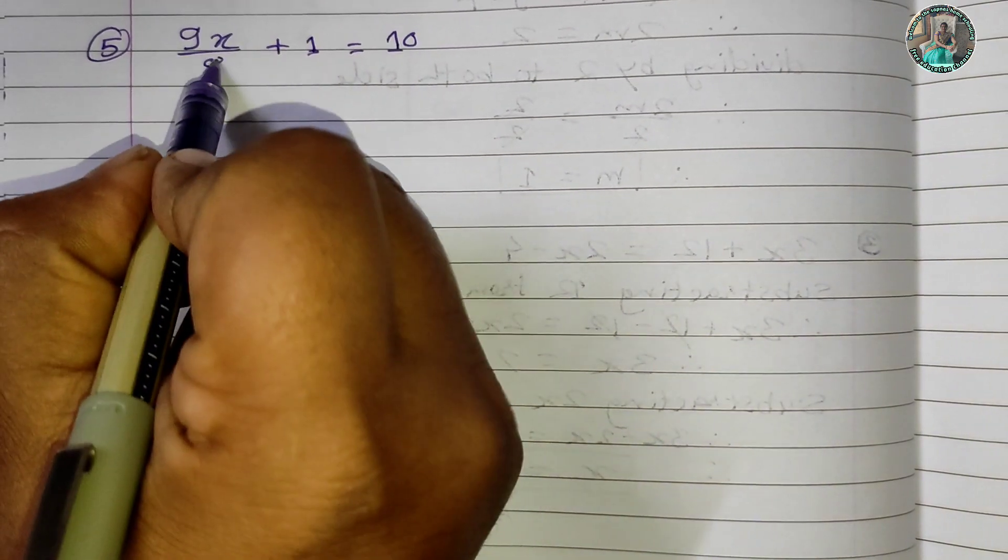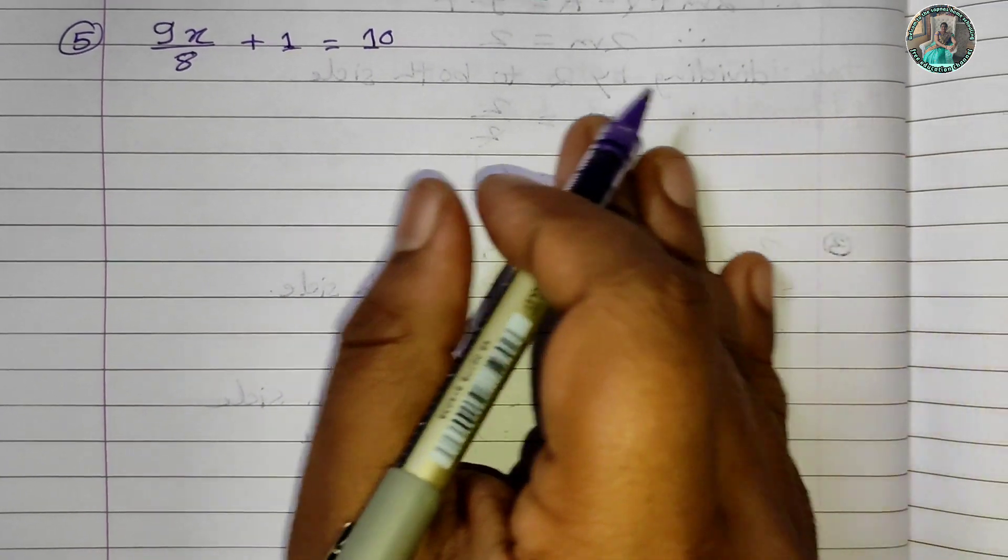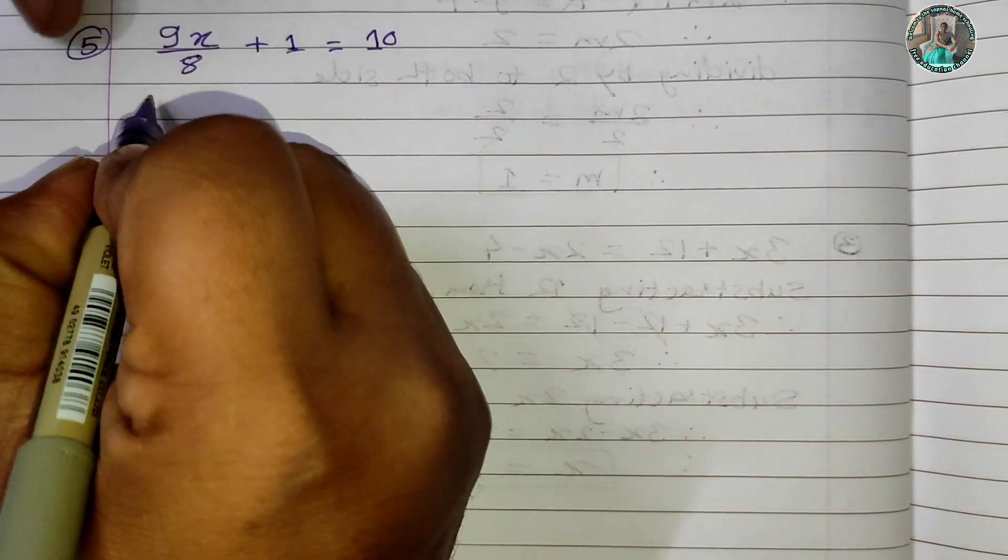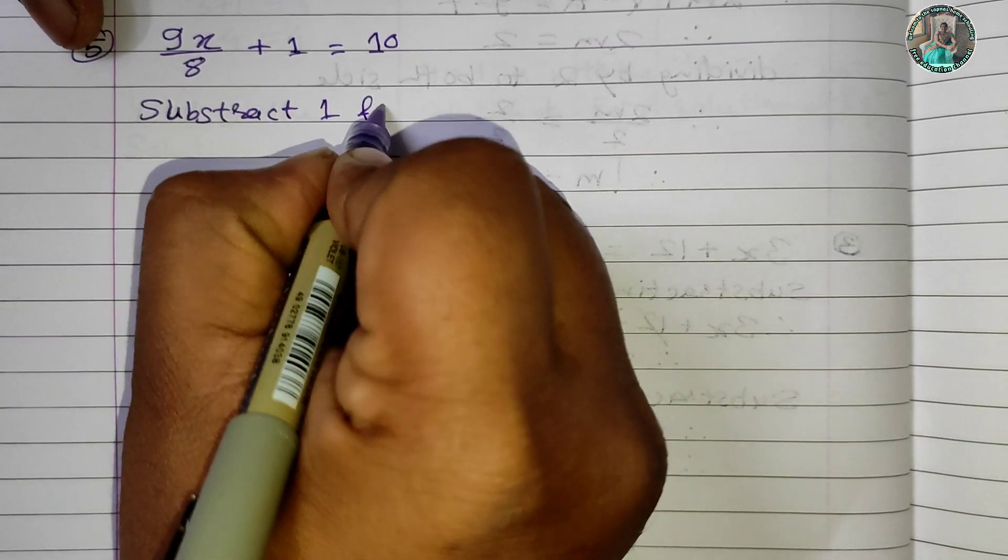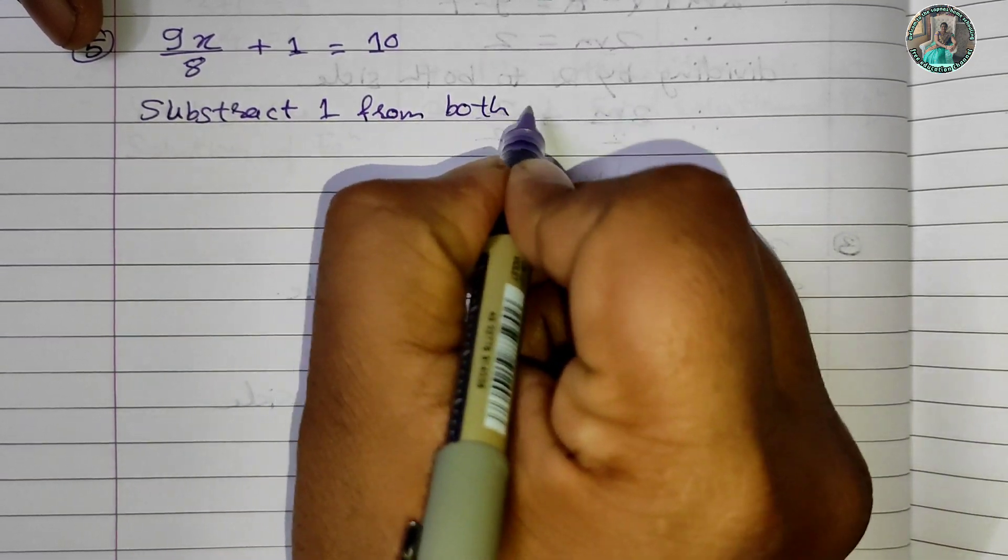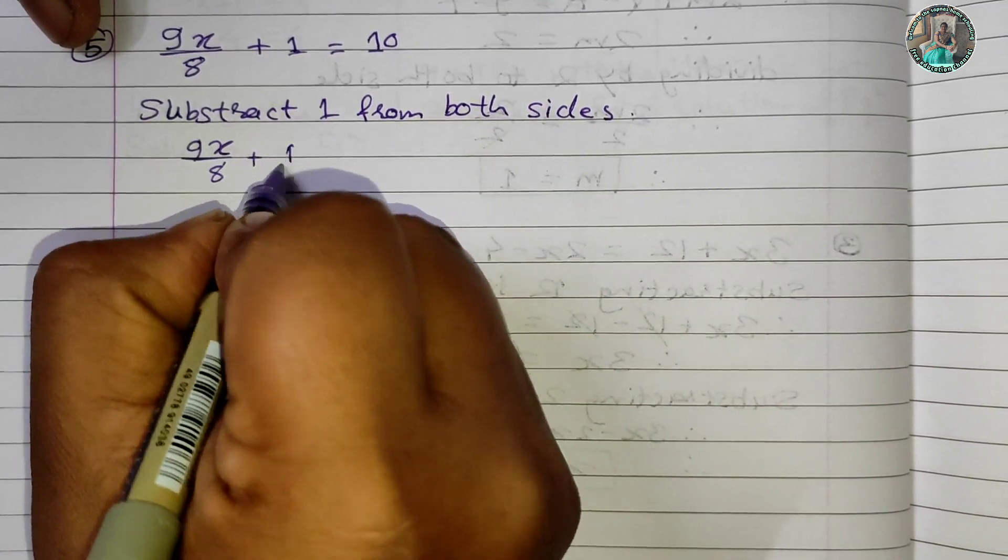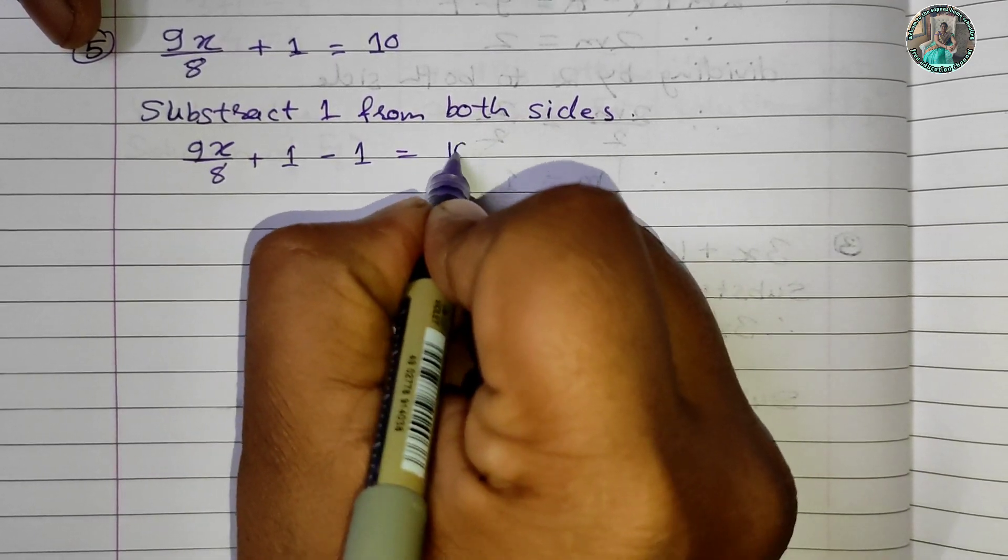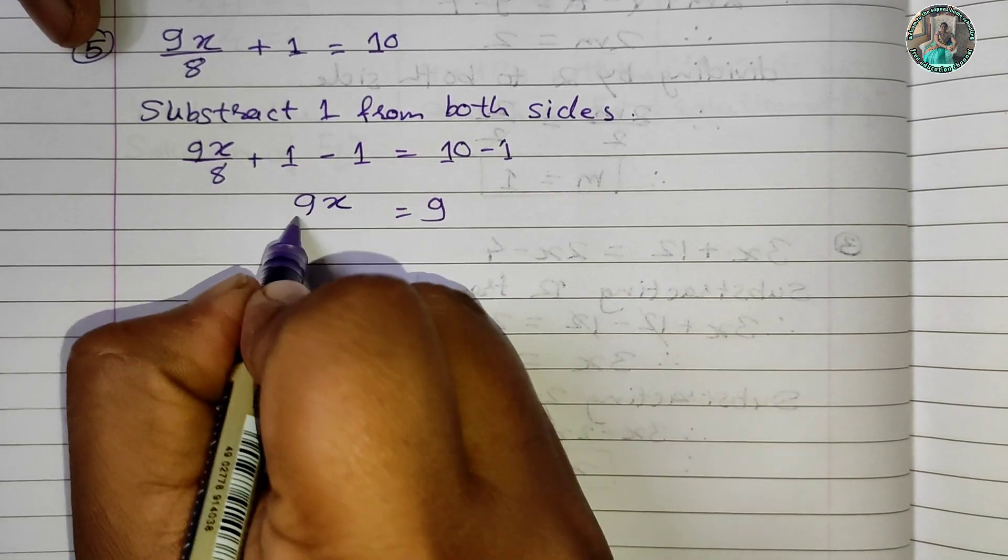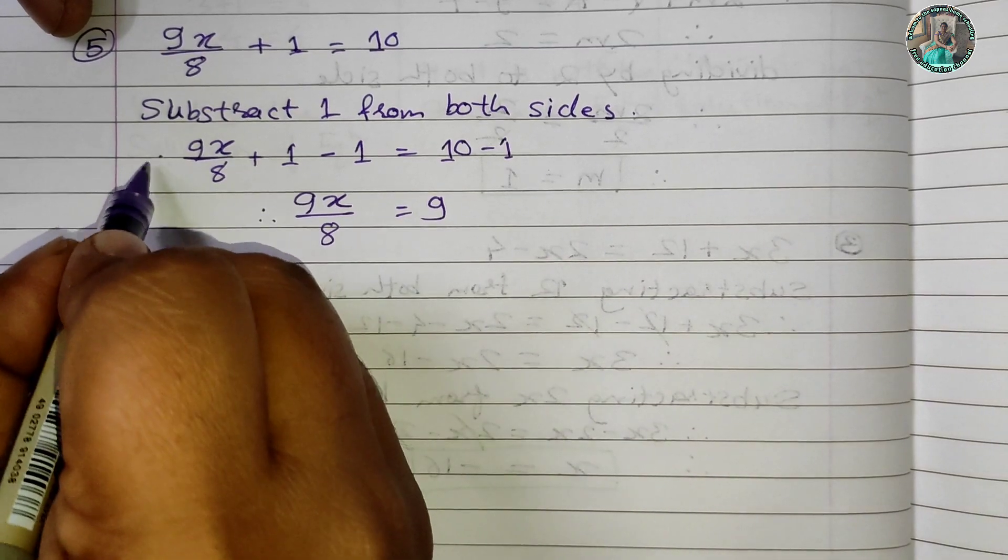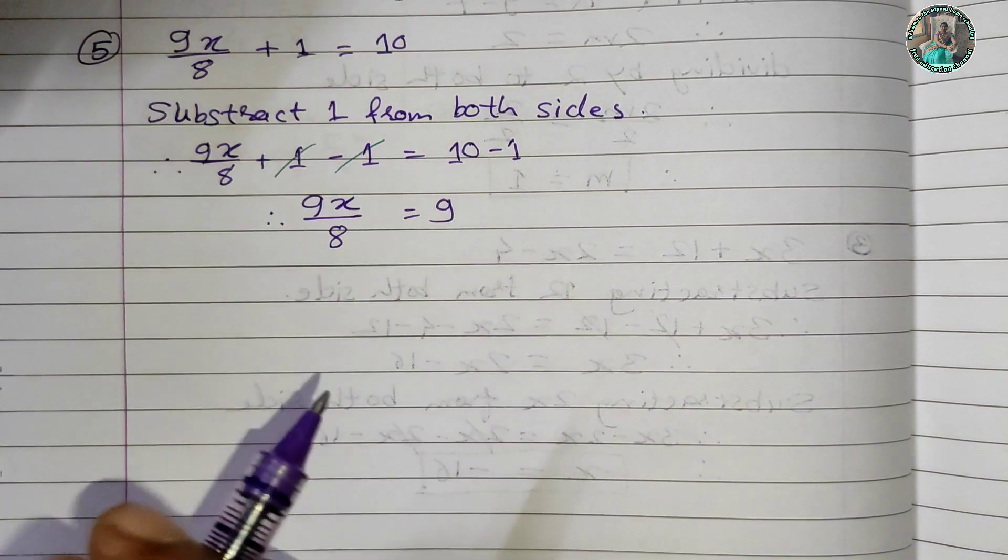Question 5: 9x/8 + 1 = 10. First, we subtract 1 from both sides: 9x/8 + 1 - 1 = 10 - 1. This gives us 9x/8 = 9.